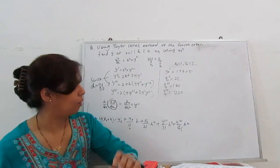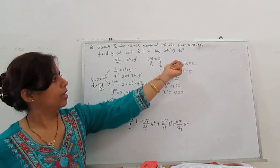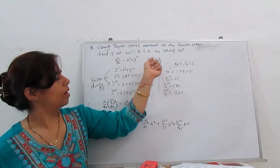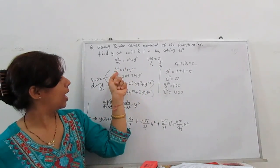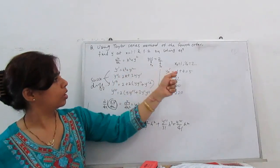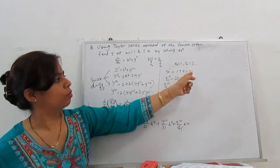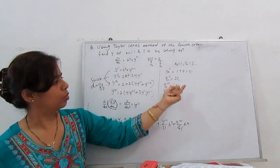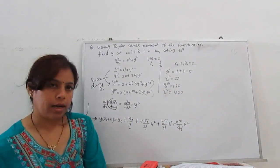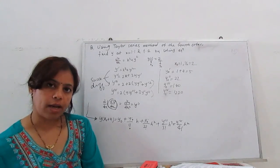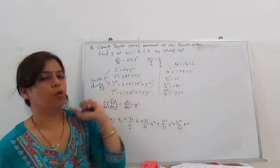Now we find the values needed for Taylor series expansion: y₀, y'₀, y''₀, etc. Our initial values are x₀ = 1, y₀ = 2. Substituting into y' = x² + y²: y'₀ = 1² + 2² = 1 + 4 = 5. Substituting into the higher derivatives gives: y''₀ = 22, y'''₀ = 140, y''''₀ = 1220. We calculate up to fourth order because the problem asks for fourth-order method.